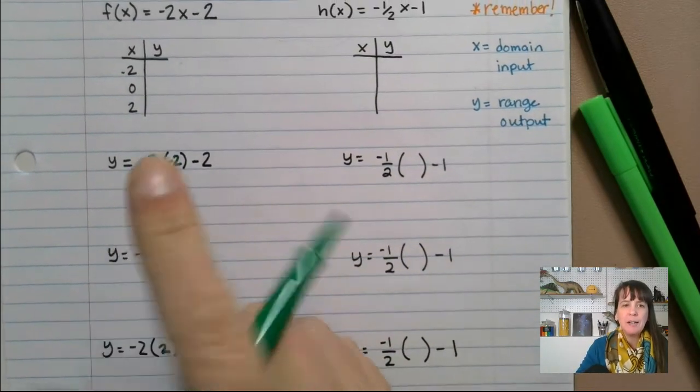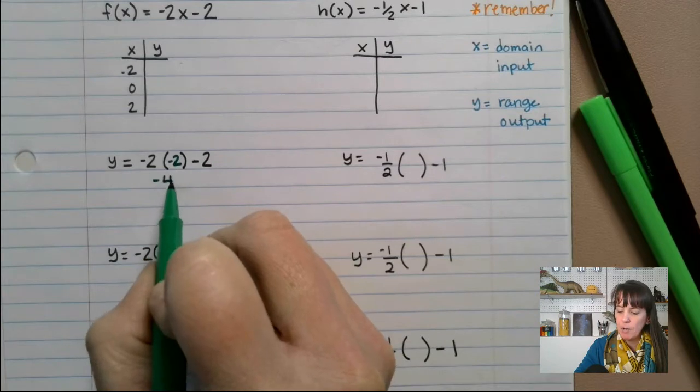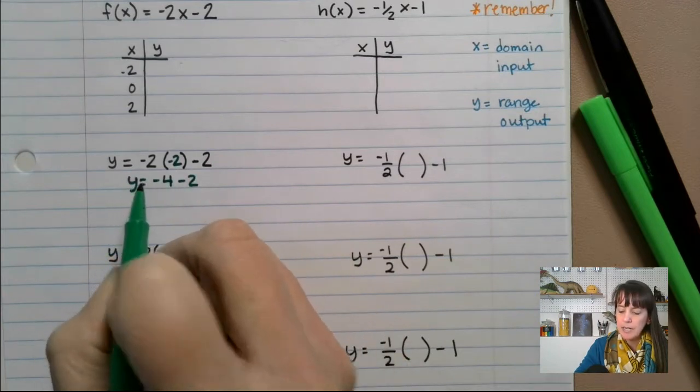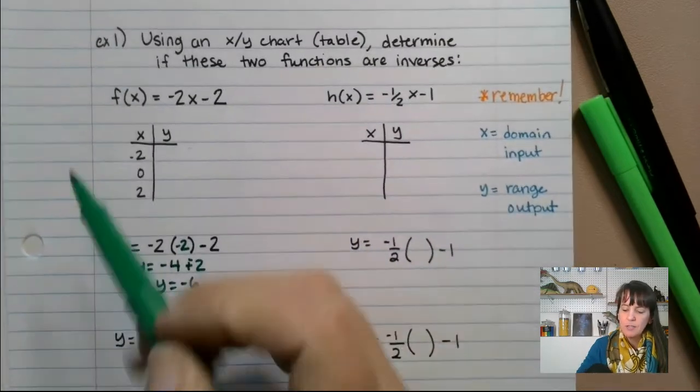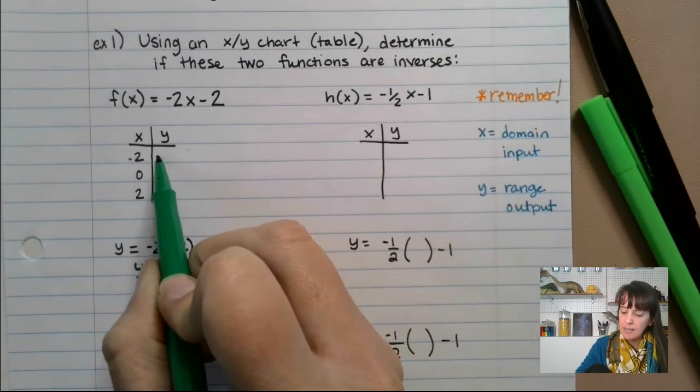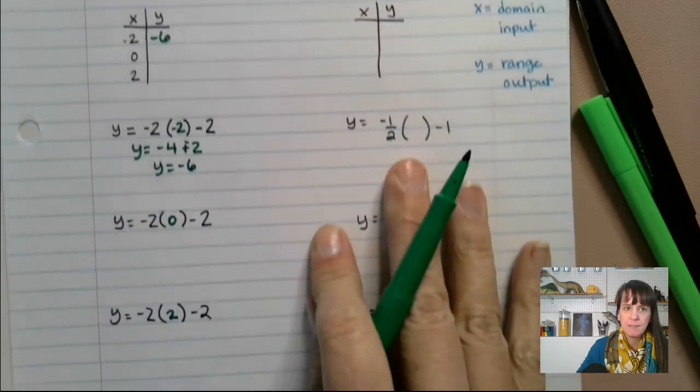When we plug negative two in, we get negative four minus two. Y equals negative four minus two. Add the opposite, we get y equals negative six. So when x is negative two, y is negative six.